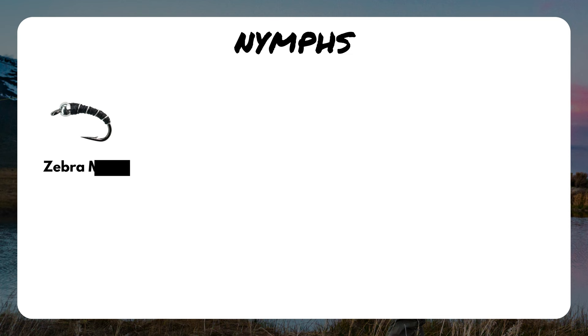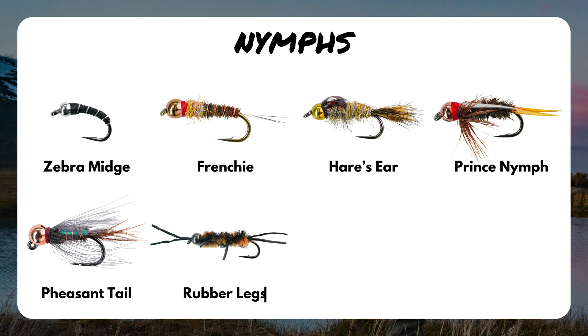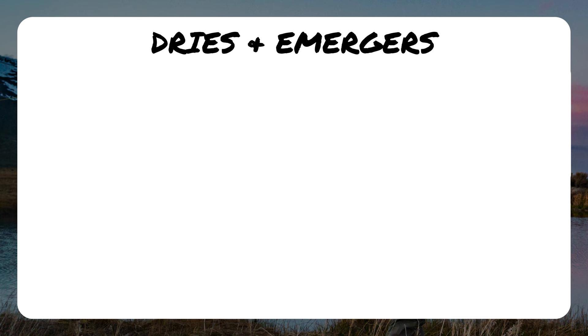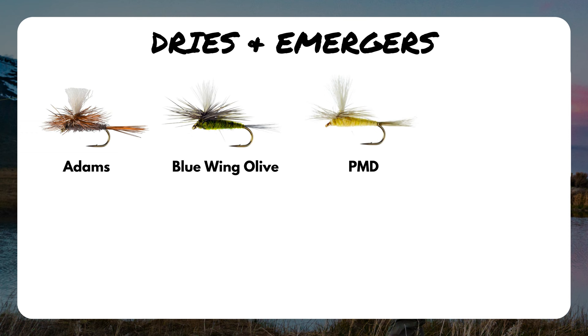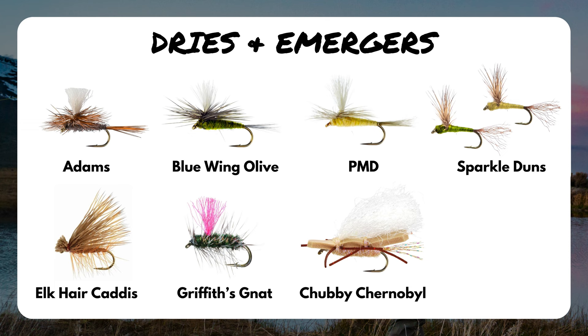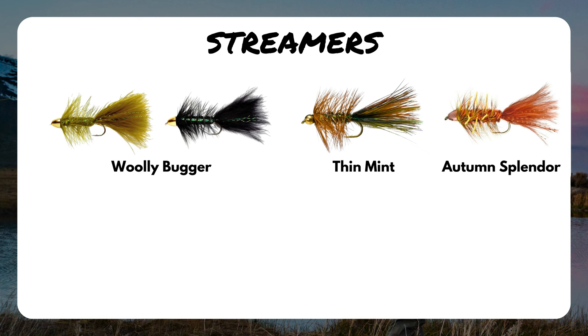Now that we've covered the ABCs, as promised, let's go through a few time-tested, classic, proven patterns that no matter where you're fishing — eastern or western rivers — if you're fishing for trout, these will get the job done. For nymphs: zebra midge, frenchy, hare's ear, prince nymph, pheasant tail, rubber legs, copper john, and san juan worm. For dry flies and emergers: parachute adams, blue wing olive, PMD, sparkle duns, elk hair caddis, griffith's gnat, chubby chernobyl, and stimulator. For streamers: woolly buggers in a bunch of different colors, thin mints, autumn splendors, leeches, clouser minnows, crystal buggers, and slump busters.